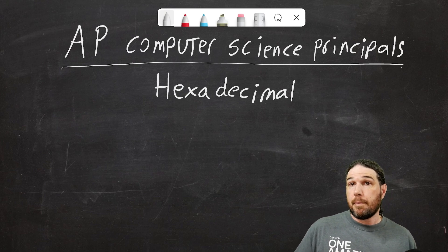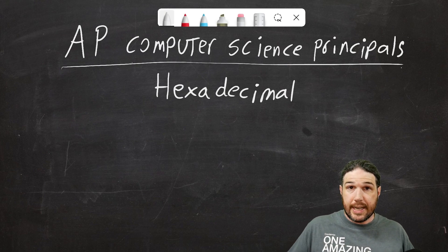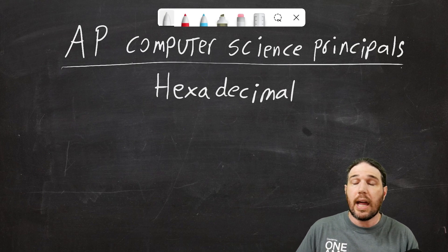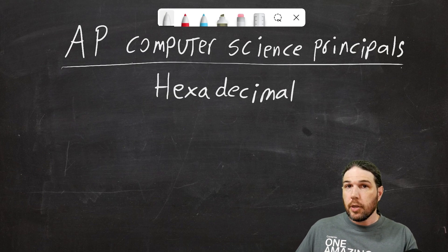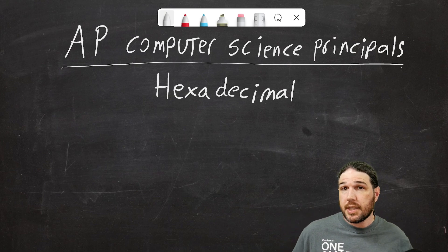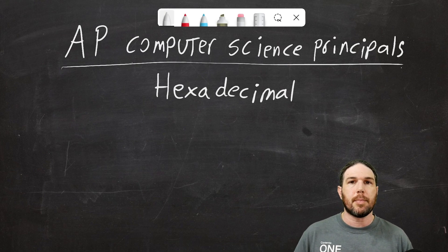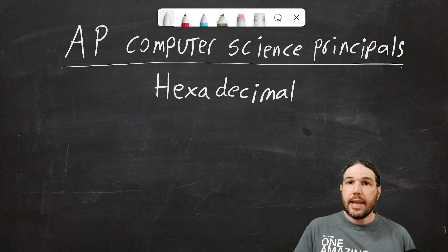Now this shouldn't be a big leap because we've already talked a lot about the base 10 decimal system that we use in our day-to-day lives and a lot about binary, the base 2 system that computers use. Hexadecimal is another number system that follows the exact same principles, except it's designed to be able to make very large numbers in a small number of characters. Let me show you what I mean.